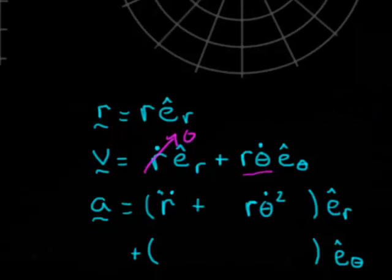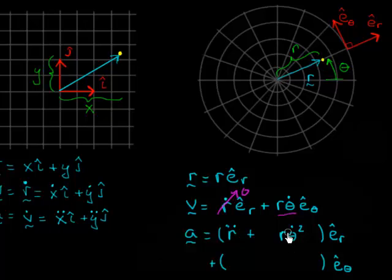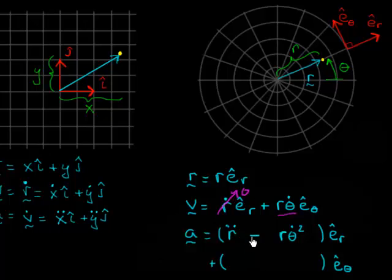There's still one remaining problem with this expression. The problem comes with the sign. Remember, r is always positive — it's the distance from the origin. And theta-dot could be positive or negative, but I'm squaring it, so that's always positive. This term is therefore always positive, but the centripetal acceleration it represents is inward — in the minus e-hat-r direction. So this sign should be negative. The correct term is minus r times theta-dot squared.